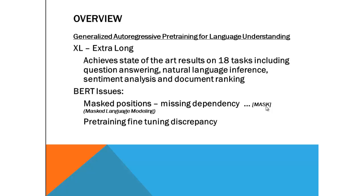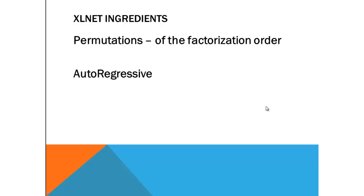These are the BERT issues that I was trying to bring to your focus. Now let's talk about what are the ingredients, the components of XLNet. XLNet actually employs two specific techniques. The first is called permutations — when you have a sentence with four or five tokens, it creates a permutation combination of all the words or tokens in the sentence and feeds this to the model. The number of permutations are of factorial order: 4, 3, 2, 1, like that.